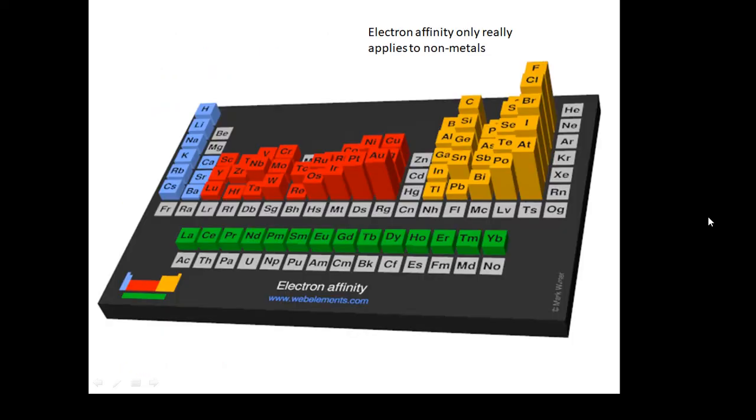Now again, we're not bothered about the transition metals, and strictly speaking we're only bothered about non-metals, because the metals don't want to gain an electron—they want to get rid of an electron. It's only the non-metals that want to gain an electron. You can imagine that group 7—fluorine, chlorine, bromine, iodine—they'll have the highest electron affinity. If they gain an electron, they'll release the most energy, so they have the highest electron affinity.